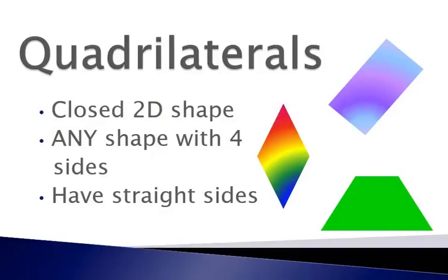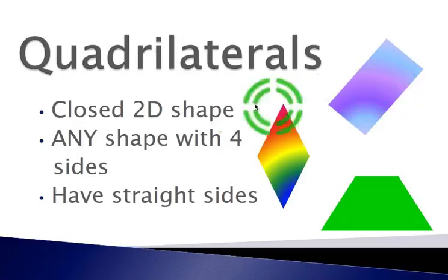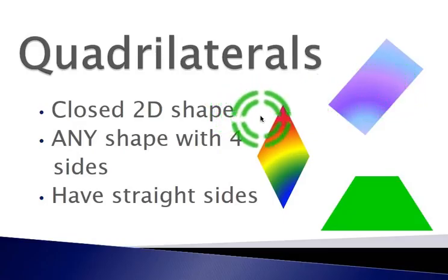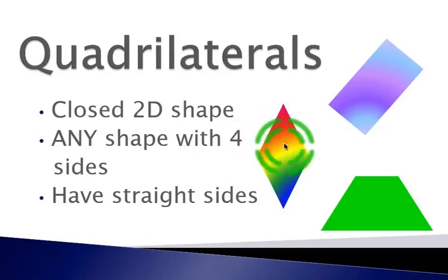The next type of geometry figures that we are going to talk about are quadrilaterals. Quadrilaterals are closed two-dimensional shapes. They are any shape that have four sides, and those sides must be straight.